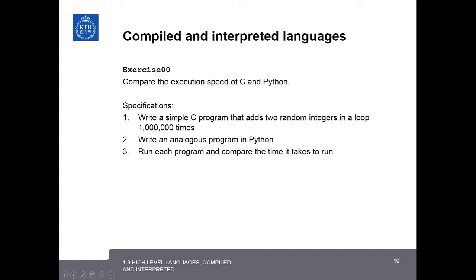Next, let's look at an example where we compare the execution speed of C against Python. The specifications of this example will be to write a simple C program that adds two random integers in a loop one million times, and then write the same program again in Python. We will run each program and compare the time it takes for them each to run.